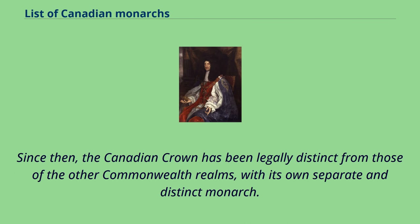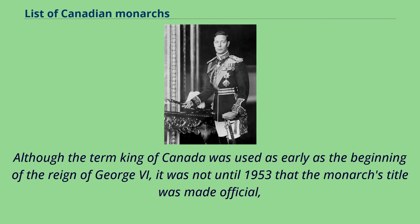Since then, the Canadian crown has been legally distinct from those of the other Commonwealth realms, with its own separate and distinct monarch. Although the term King of Canada was used as early as the beginning of the reign of George VI, it was not until 1953 that the monarch's title was made official.